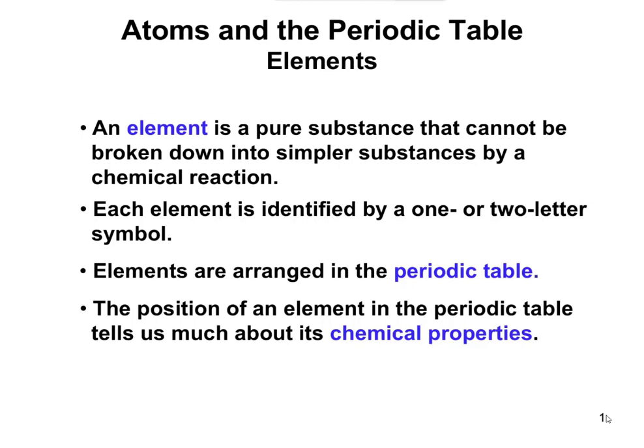Just as a reminder, an element is basically a pure substance that can't be broken down into anything simpler. If you look at that periodic table, you'll notice that all the elements are identified by a one or two letter symbol. You don't have to memorize all the symbols. We're going to focus on the first 20 elements on the periodic table and a few other ones.